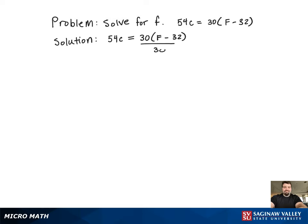What we're going to want to do is divide by the 30. That way we'll get the f minus 32 by itself. We're going to have to reduce that fraction, resulting in 9 fifths c equal to f minus 32. Now to get f by itself, just going to add the 32. And the problem's solved. f equals 9 fifths c plus 32.